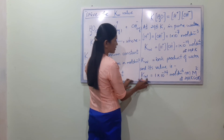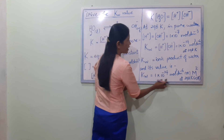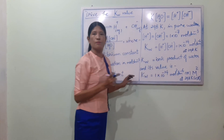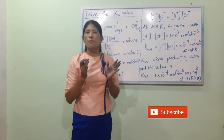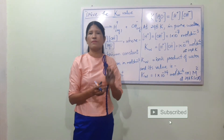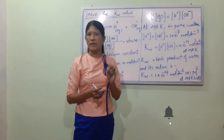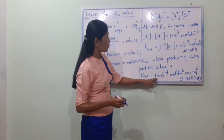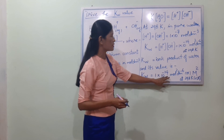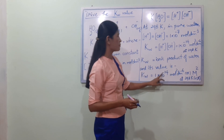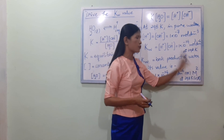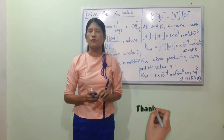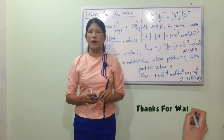In this equation, the unit mol² dm⁻⁶ represents molarity squared. KW equals 1×10⁻¹⁴ mol² dm⁻⁶ at 298 Kelvin, which is 25 degrees Celsius.